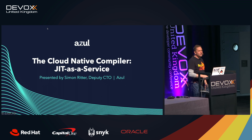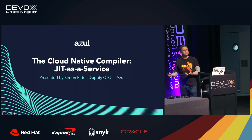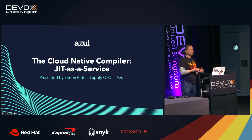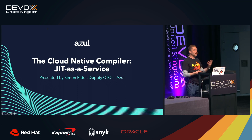What I'm going to talk about is the cloud-native compiler — JIT as a service. Obviously, if we look at Java, the Java Virtual Machine, we use just-in-time compilation to enable us to get better performance for our applications.